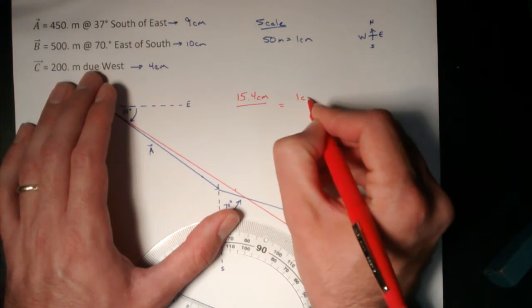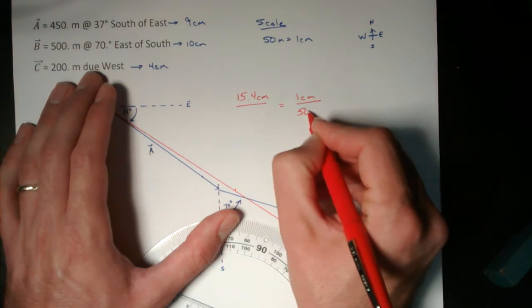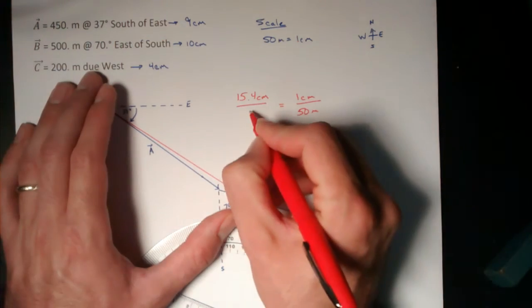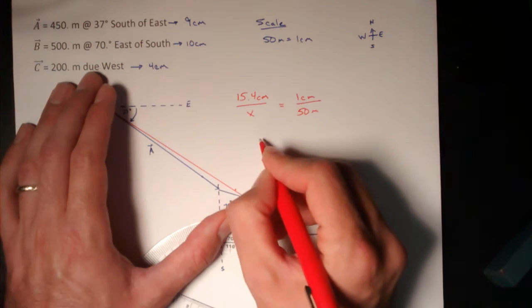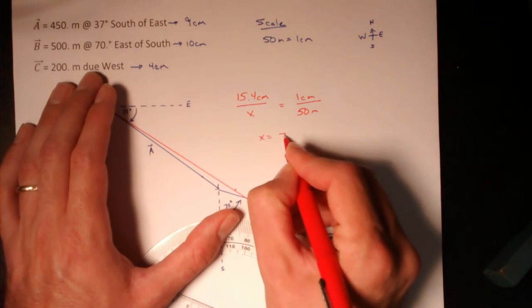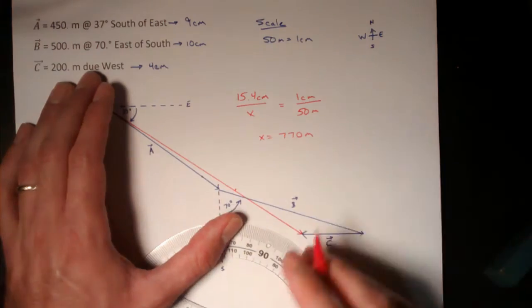Remember that 1 centimeter represents 50 meters on my paper, and so 15.4 centimeters will represent 770 meters in real life.